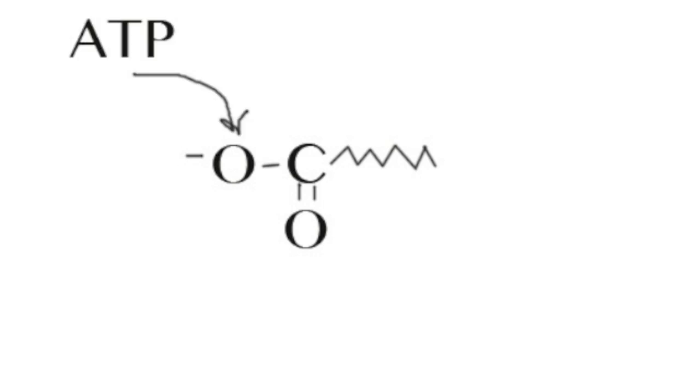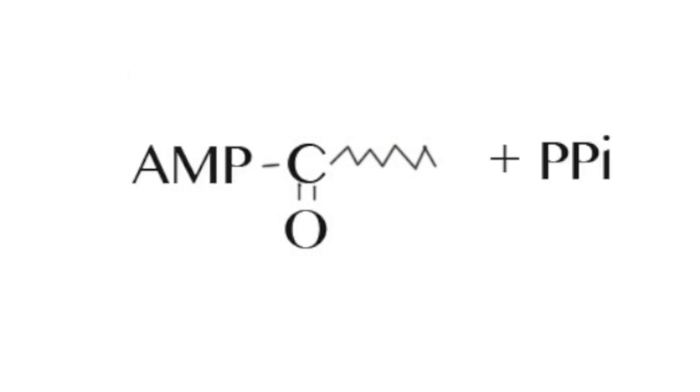In the first step, ATP bonds with the carbonyl carbon of fatty acid forming acyl adenylate. In this reaction, ATP releases a diphosphate.